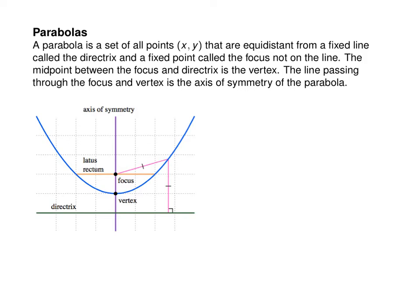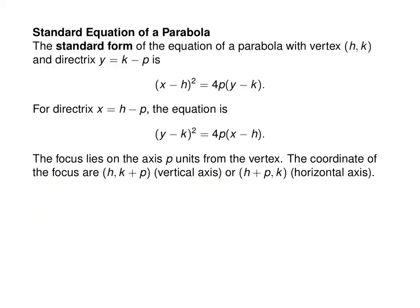By definition, the distance from a point on the parabola to the focus equals the distance from that point down to the directrix. This definition gives us the equation of a parabola: (x minus h)² equals 4p times (y minus k), for a regular parabola with a vertical axis of symmetry.